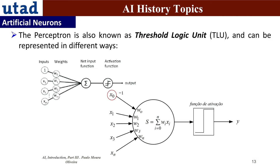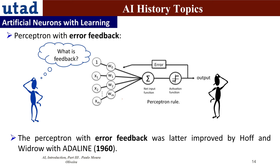The perceptron is also known as a threshold logic unit (TLU) and can be represented in several ways. One graphical representation shows the bias input. We will speak later about perceptrons in the neural networks section. Learning was developed and then we got error feedback — passing the error from the output back to the input. With the perceptron rule and later improvements like Adaline, it improved the concepts of learning in neural networks.